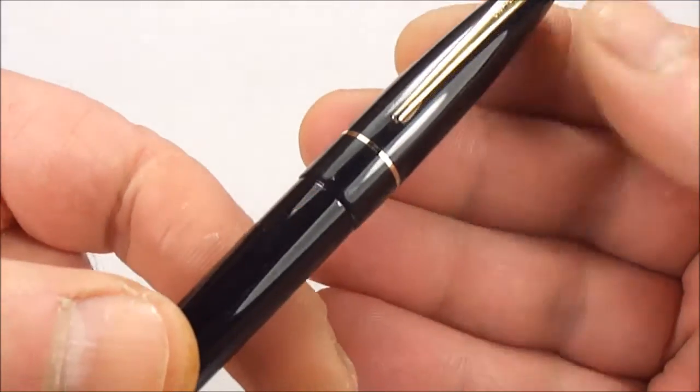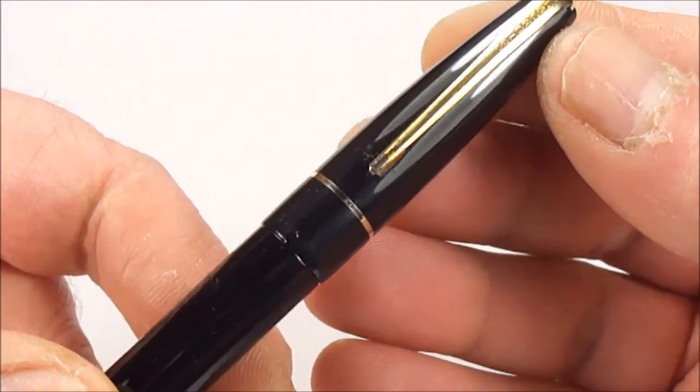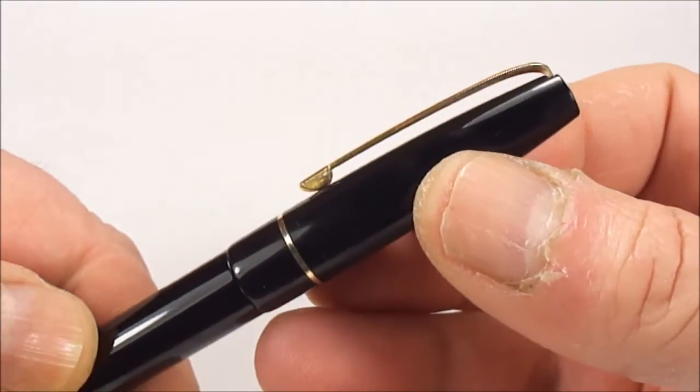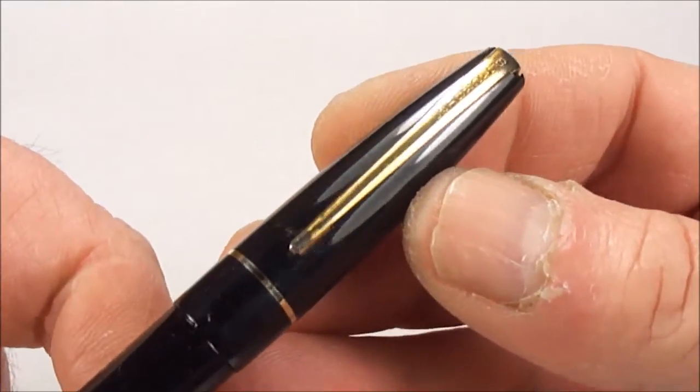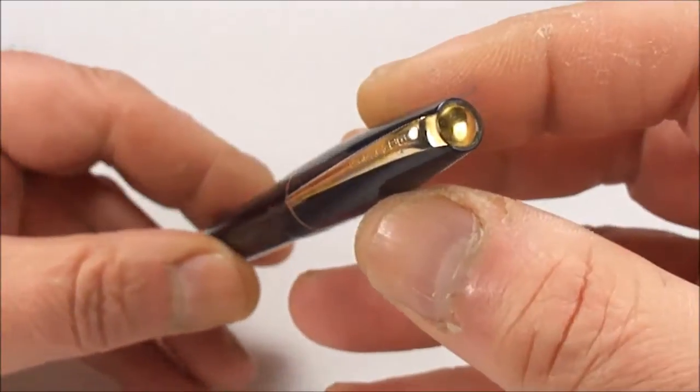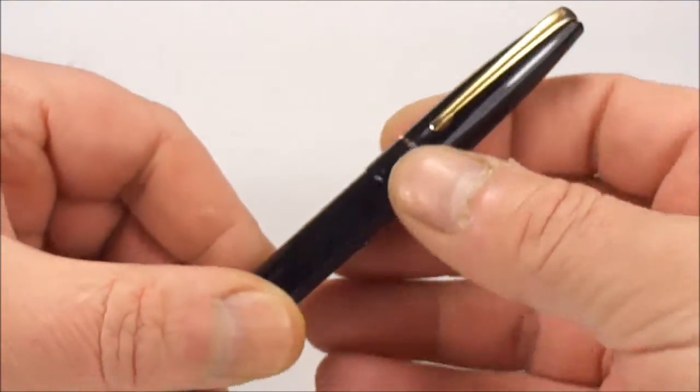You can see the cap has a quite thin cap band to the bottom and a thin clip to the top with the word Blackbird written on the clip, and at the top there's this golden stud.